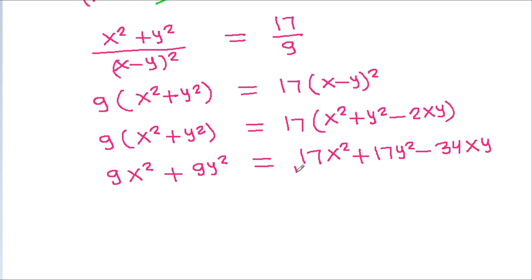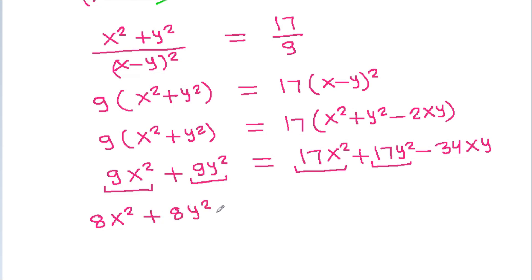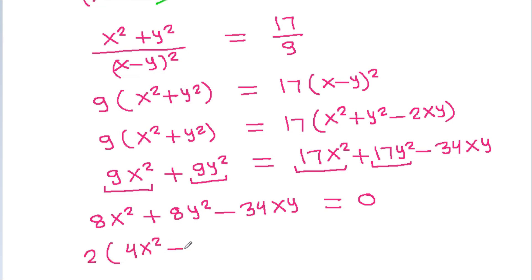Rearranging: 17x² - 9x² minus 9y² plus 8y² minus 34xy equals 0, which simplifies to 2 times (4x² - 4y² - 17xy) equals 0.